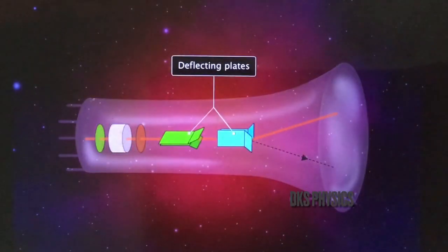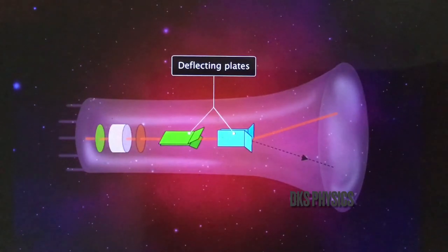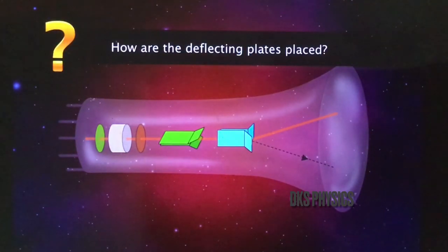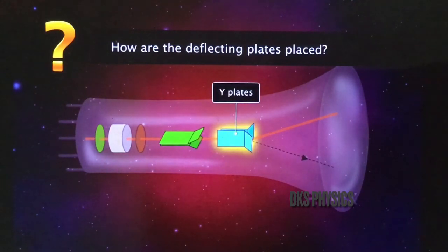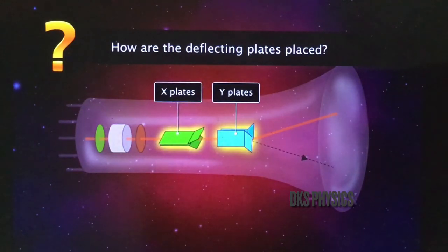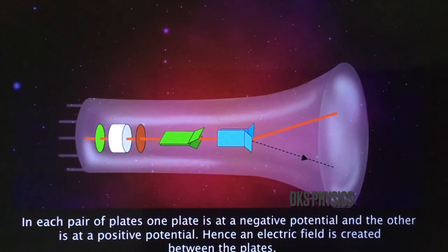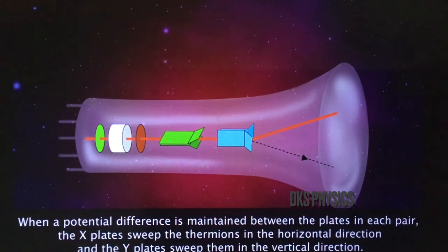Between the electron gun and the fluorescent screen are either two sets of electrical plates or two sets of magnetic coils. Electric deflecting plates are used in small cathode ray tubes, while magnetic deflecting plates are used in large ones. One set of plates is placed horizontally — these are called the Y plates. The plates kept vertically are called the X plates. In each pair, one plate is at a negative potential and the other at a positive potential, creating an electric field between them. The X plates sweep the thermions in the horizontal direction and the Y plates sweep them in the vertical direction.